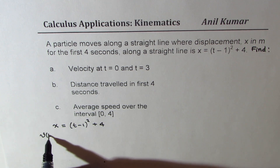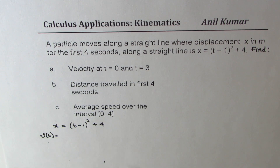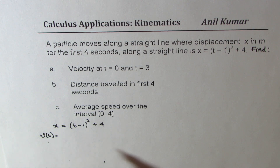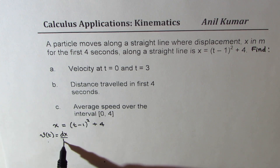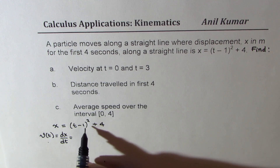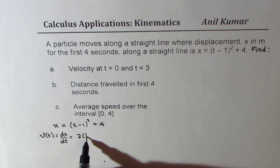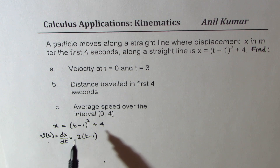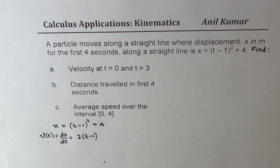Velocity as a function of time is the rate of change of displacement, so it is dx/dt, which will be 2 times t minus 1. Using the power rule for the derivative, the derivative of the constant is 0, so we get the velocity function.